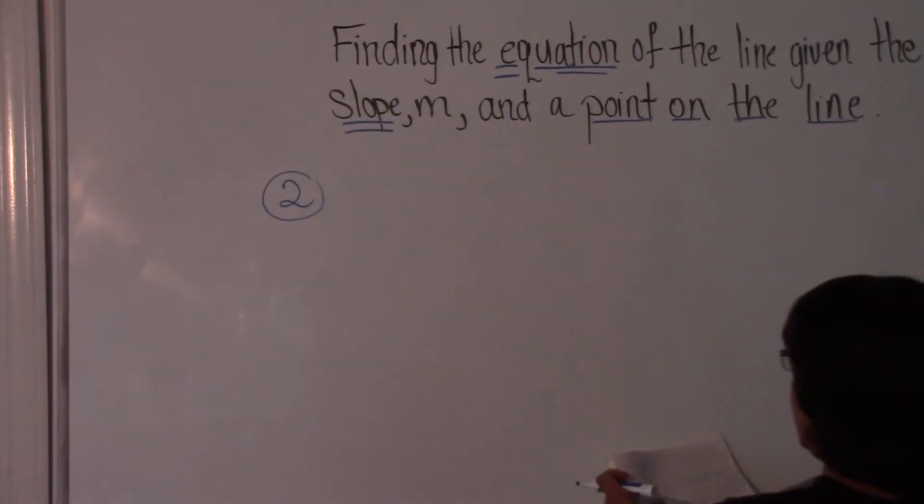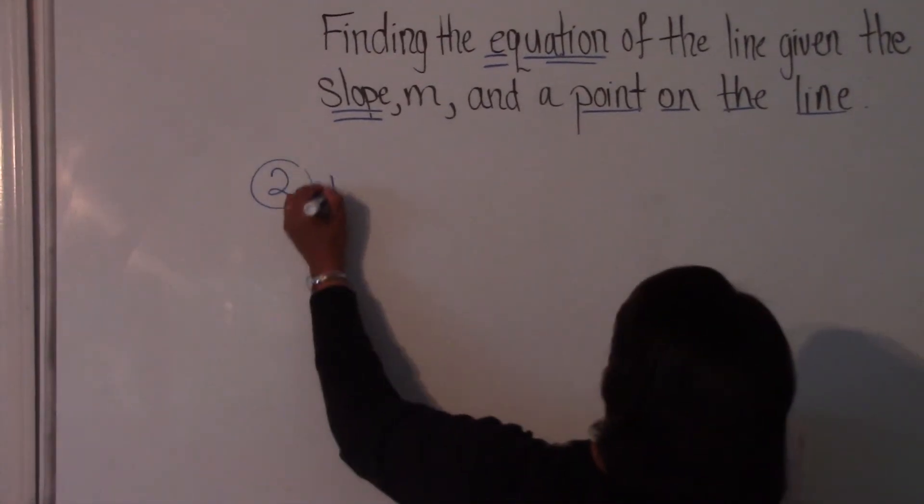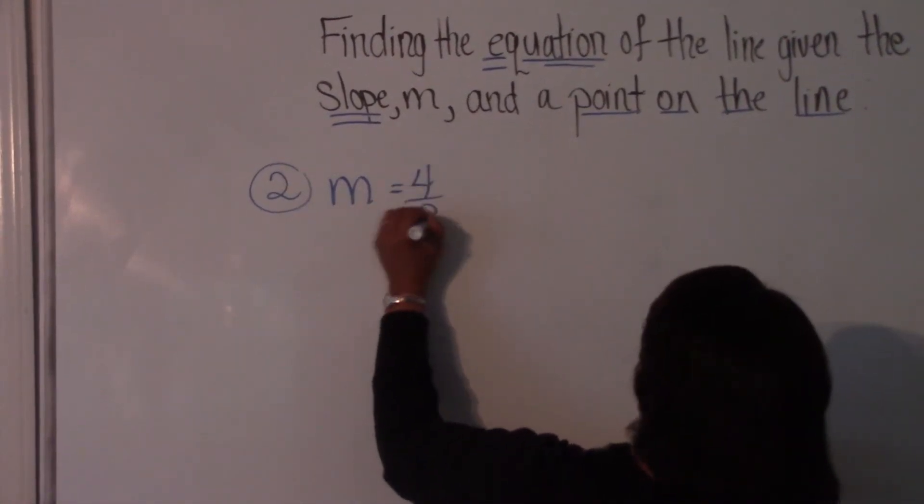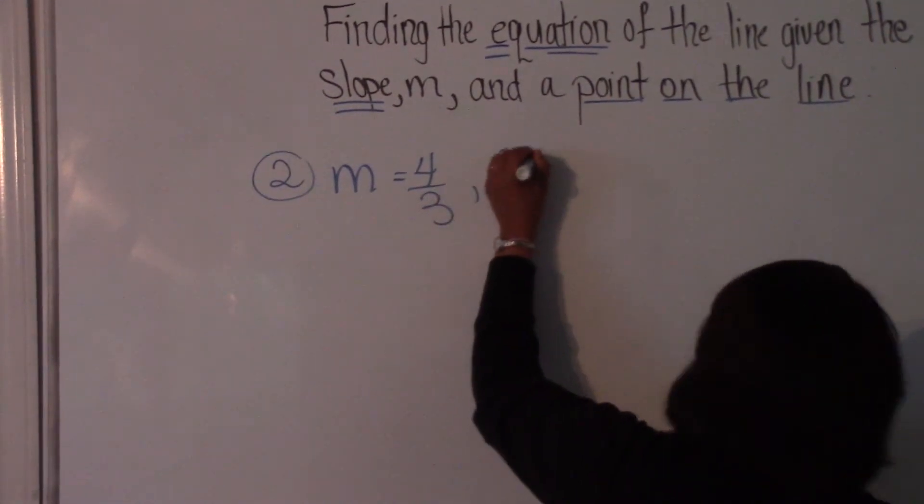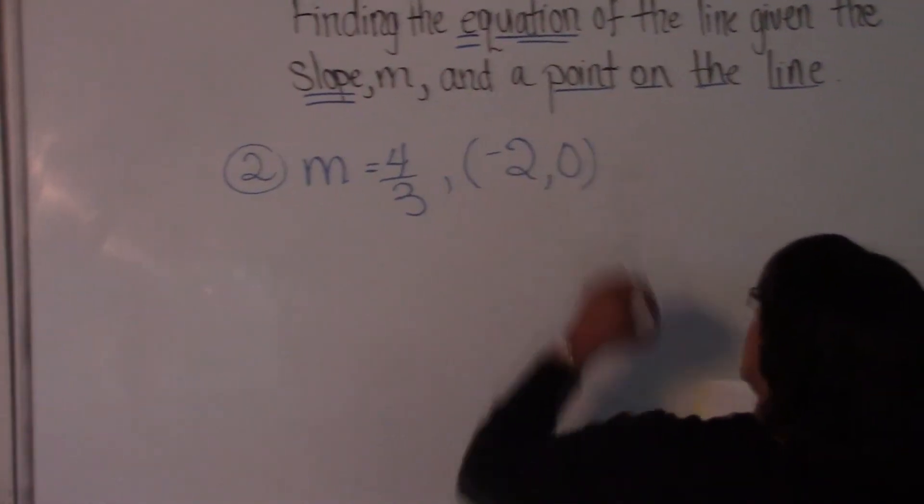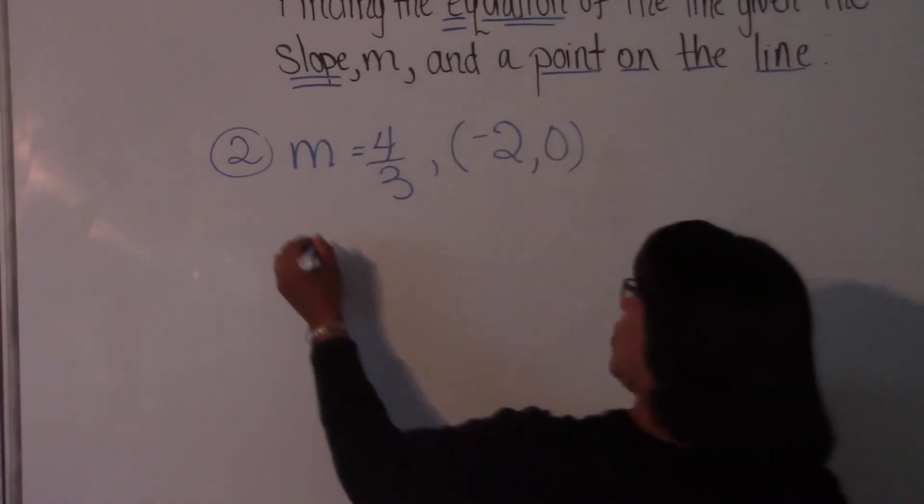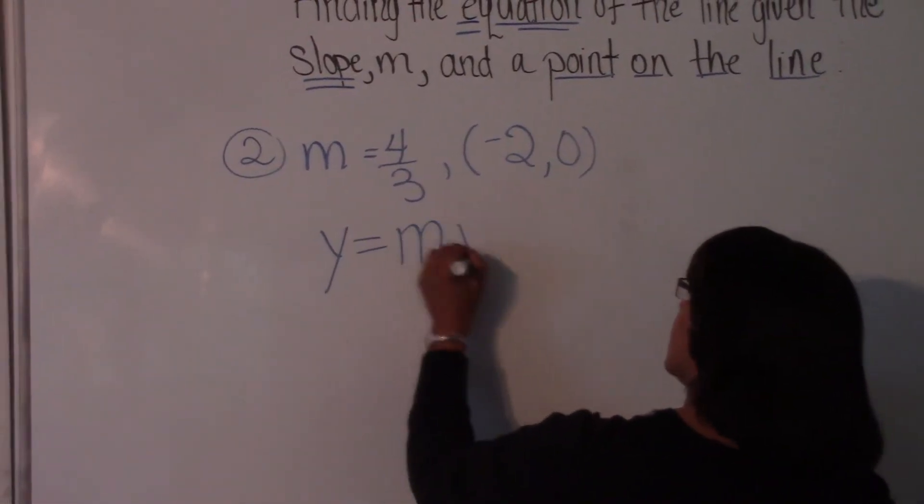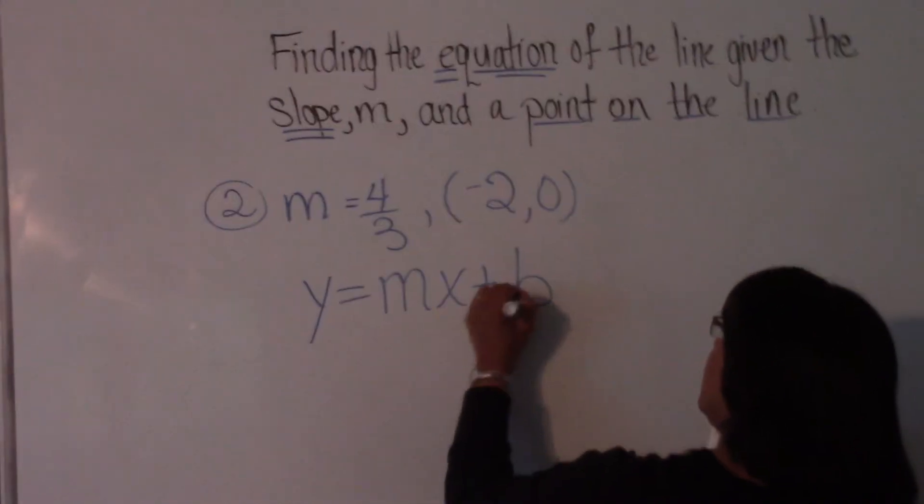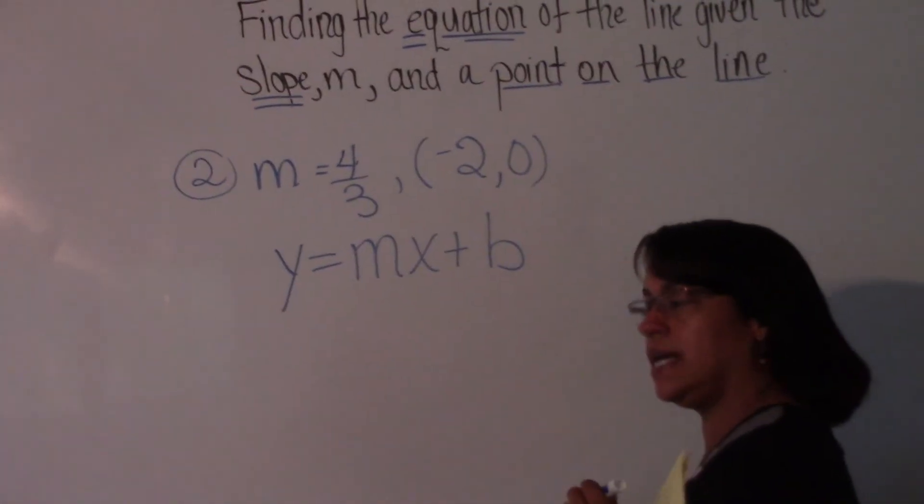So my second example for you, we have m is equal to 4 thirds with the ordered pair of negative 2, 0 on that line. We're going to use the exact same procedure. y is equal to mx plus b. And we're going to plug in for m, x, and y.